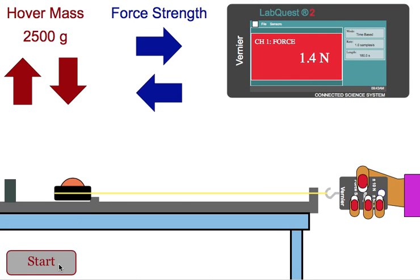Students would then reset their system, change one of the two variables only, run another trial, and continue to do this until they've collected enough data to graph the relationship between force and acceleration while holding mass constant.